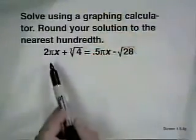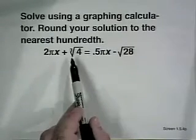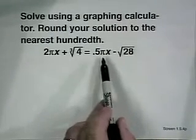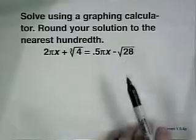Now we're going to use our graphing calculator in a little different way to solve this more complicated equation. We have the equation 2πX plus the cube root of 4 equals 0.5πX minus the square root of 28.